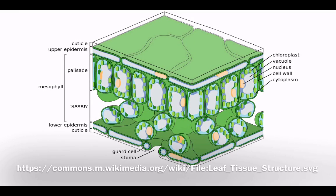Palisade mesophyll cells are found in the mesophyll layer within the leaf, right below the upper epidermis and cuticle.